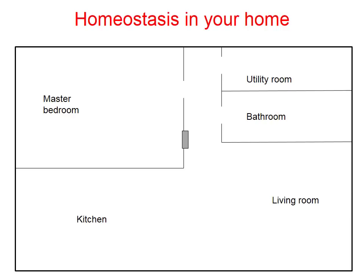Here's an analogy of homeostasis in your home. Here's the floor plan of someone's home, and usually centrally located on the wall is a thermostat, which helps to control the temperature inside your home. And maybe tucked away in the back of the utility room is the furnace.